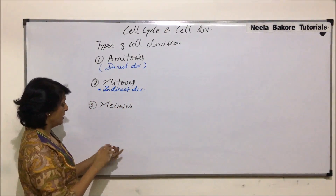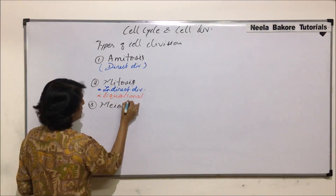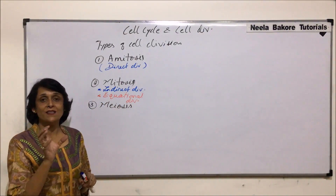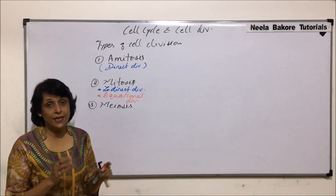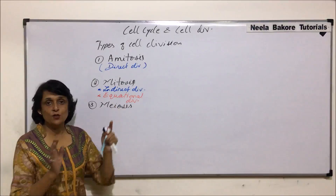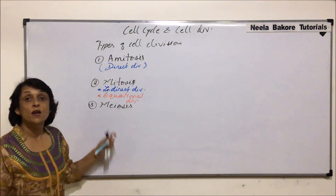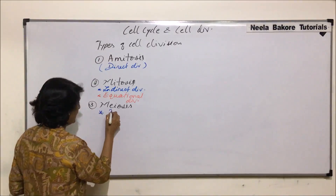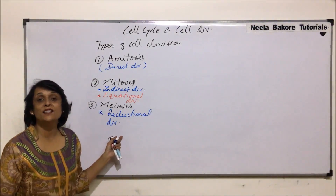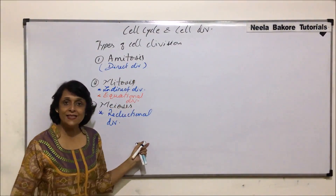Mitosis is known as equational division. The reason it is called equational division is because when one parent cell divides, the two daughter cells are genetically — that means chromosome number wise — exactly identical to the parent cell. The chromosome number is the same: 46 in the parent and 46 in the daughter cells. Meiosis is known as reductional division, meaning the chromosome number is reduced to half, and this division helps in gamete formation.